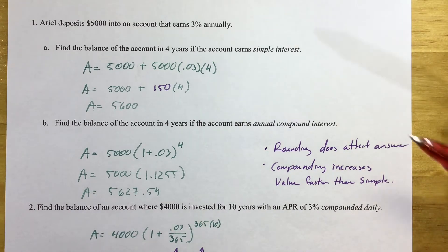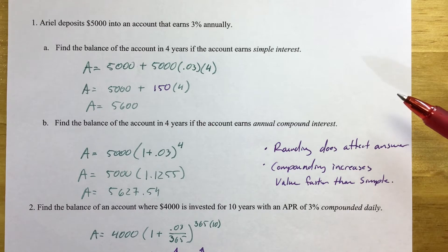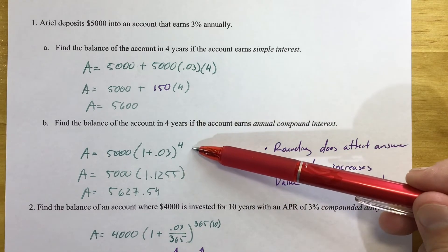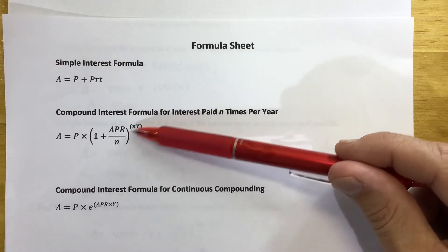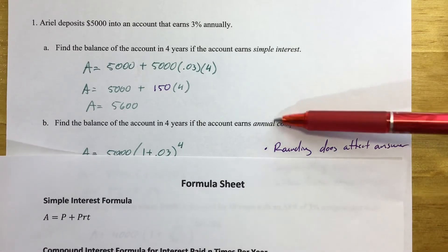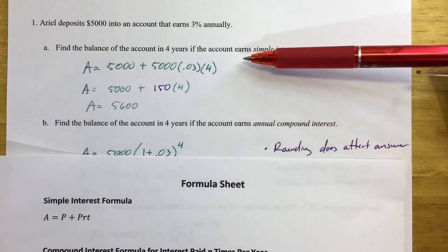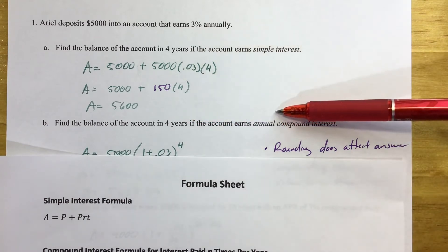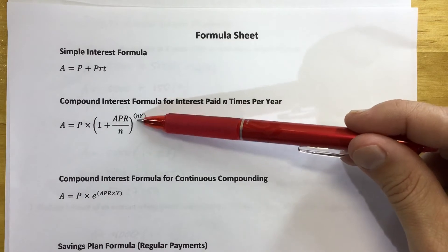With compound interest, the whole idea is interest on interest. That first year she earns $150, but in the second year she gets a little more because that $150 she earned in year one also accumulates interest. Here's what the compound interest formula looks like filled in. In this problem, n equals 1 because it says annual compounding — you don't usually see annual compound interest, it's more often quarterly or daily — but the point is to compare directly with part A's simple interest. Since n equals 1, the exponent is just y equals 4.